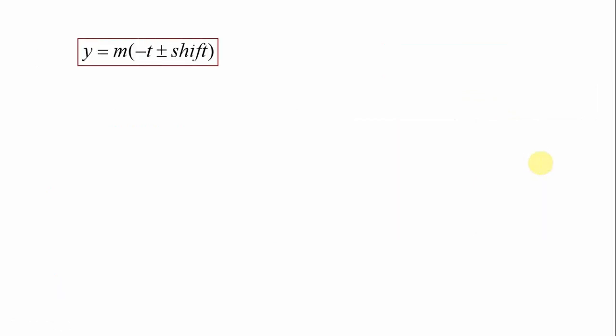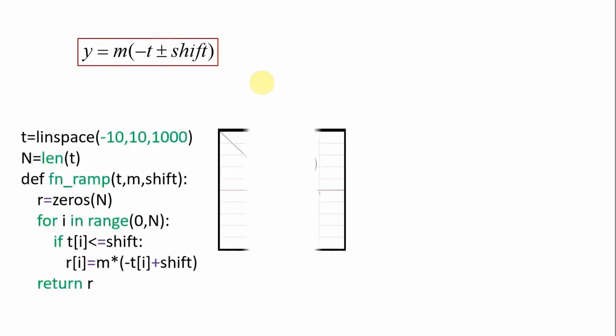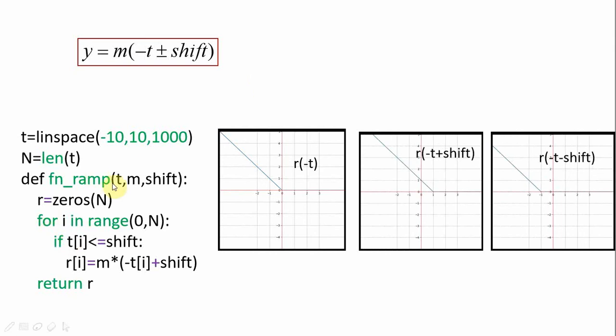Next coming to the folded signal, whose equation is given by m into minus t plus or minus shift, the change in the coding is in these quantities. These lines remain same, but while testing the condition we test for t i less than or equal to plus shift and we change the sign of this t as minus t and the remaining things will be same as before. Here for a positive shift it shifts to the right, for a negative sign it shifts to the left.